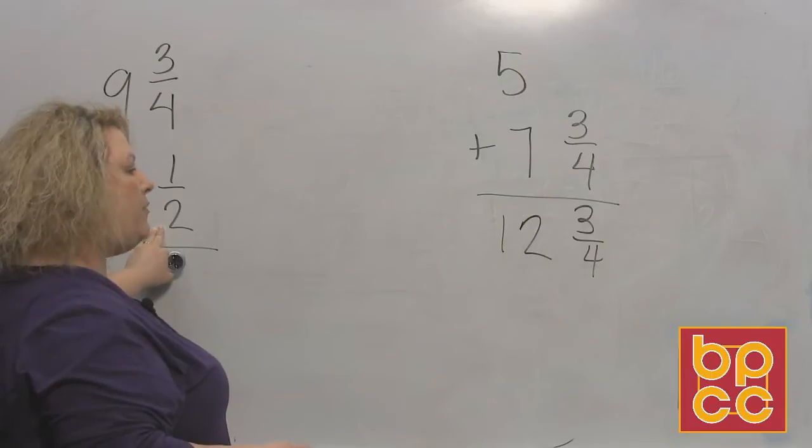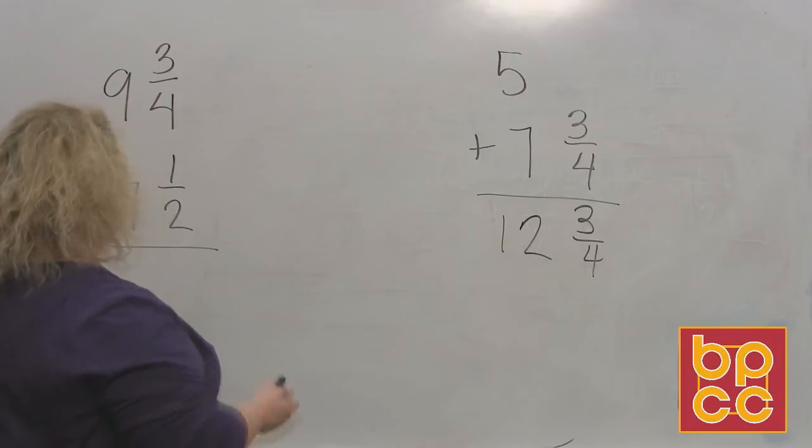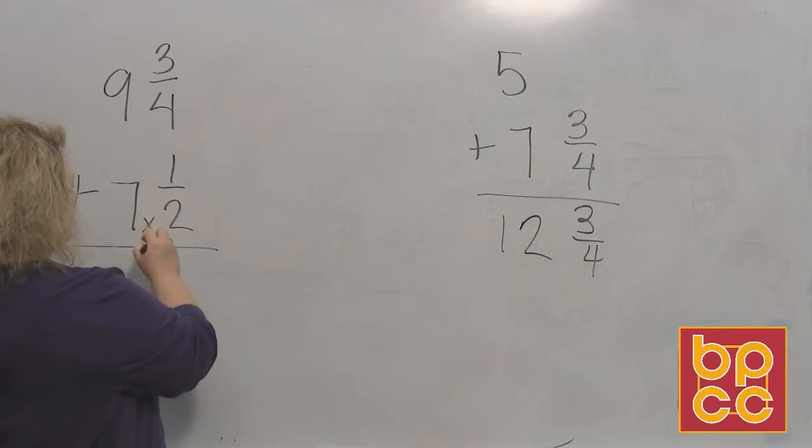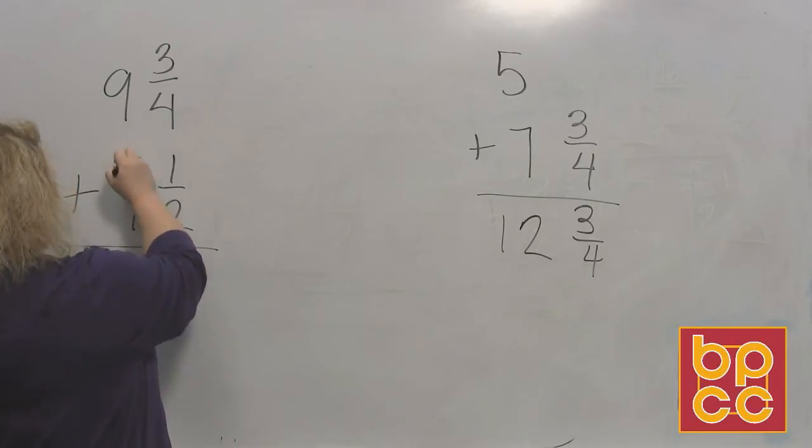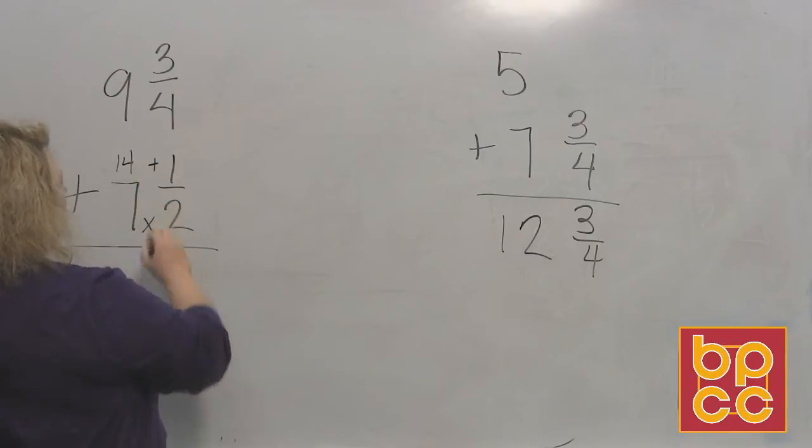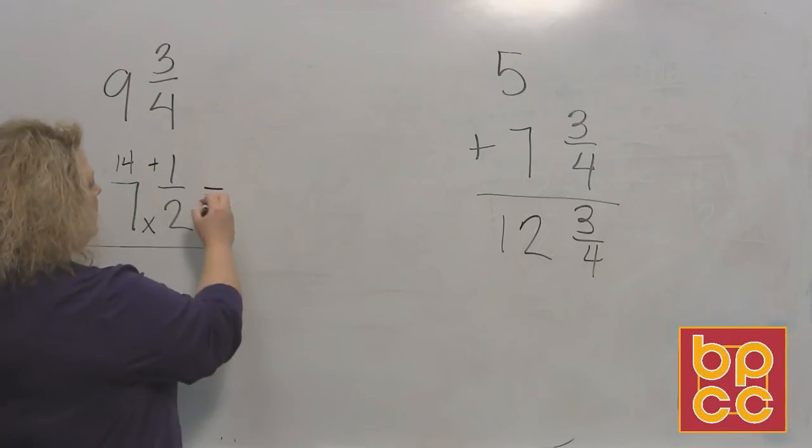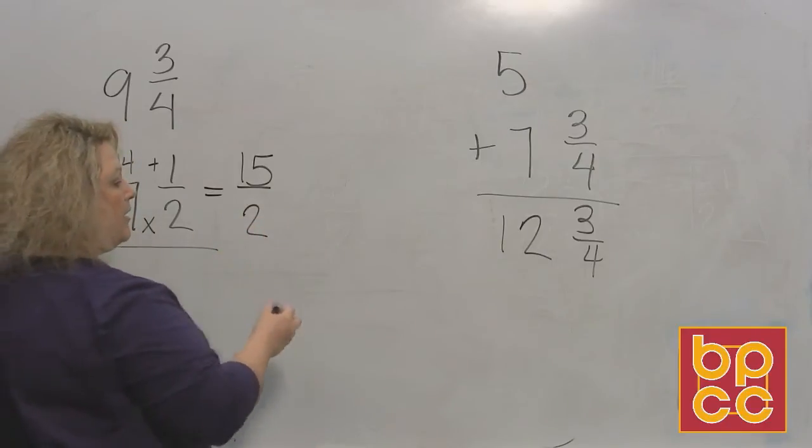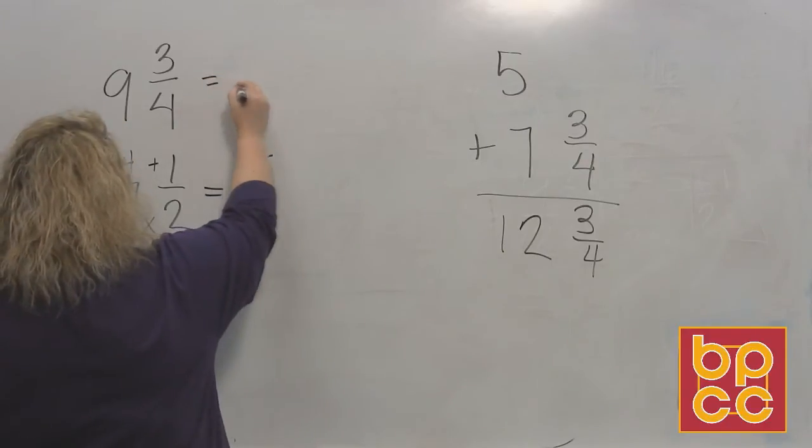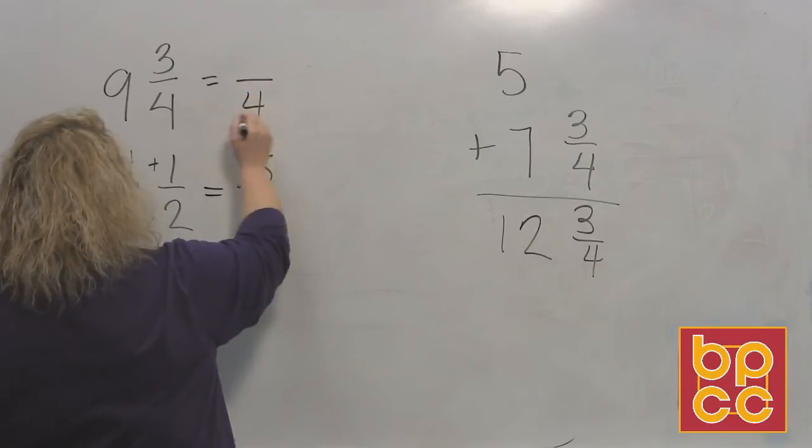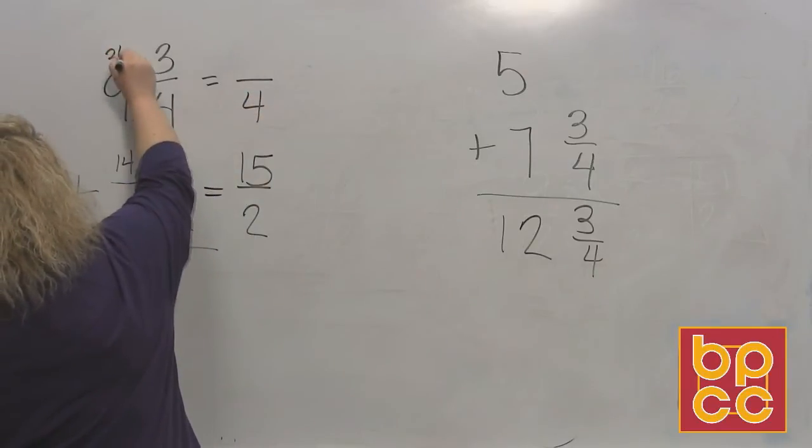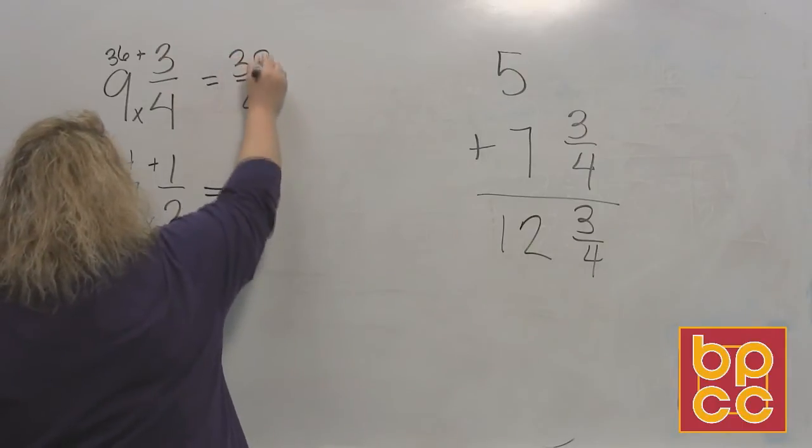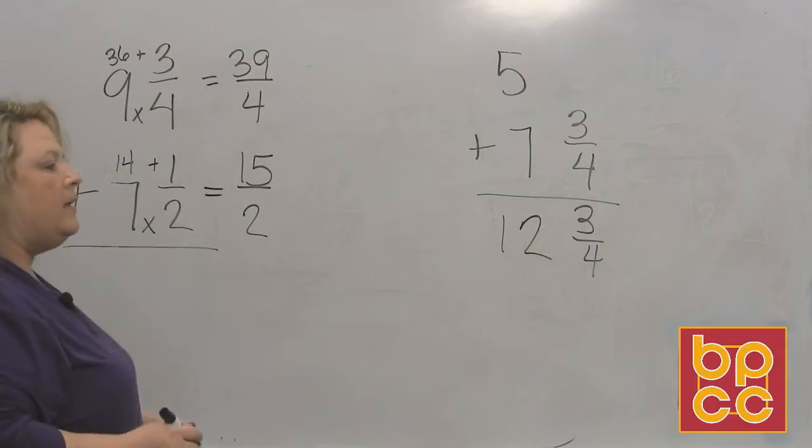Remember how to do that. To do that you do 7 times 2, and that made 14, and then I do 14 plus 1 makes 15. So that makes 15 over 2 because you don't change the bottom, you just slide it across. And then I do the same thing with the other one. Four times 9 is 36, and 36 plus 3 makes 39.